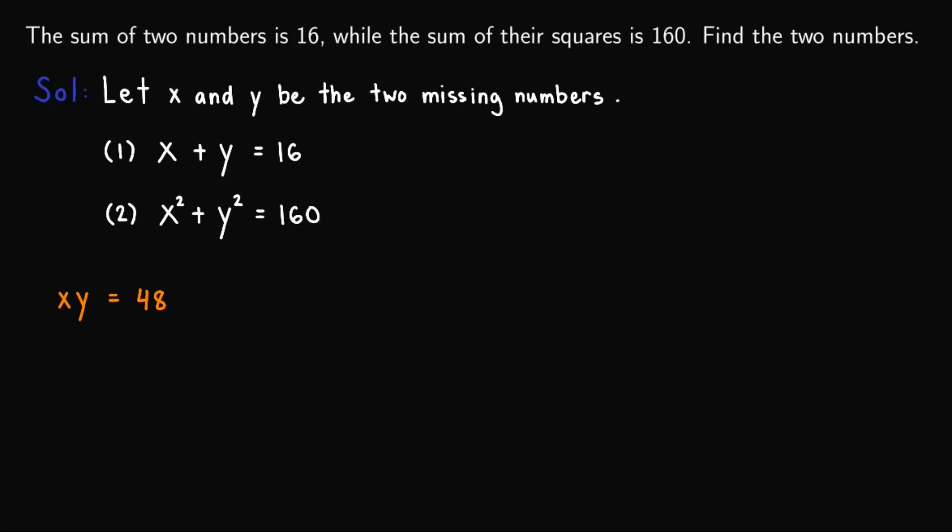And so it might seem that we are already stuck since we have two variables in this equation. But fortunately, we know that in the first equation, x plus y equals 16, we can obtain one of the variables.